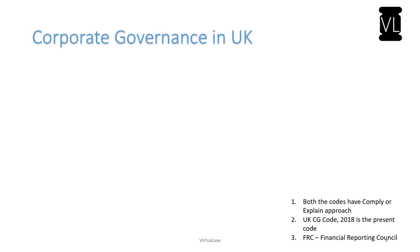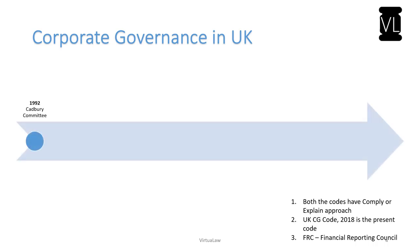Now let us look into the evolution of corporate governance in various nations. In the UK, in the year 1992, the Cadbury Committee was constituted. Its main role was to come up with a corporate governance code, and they produced the first version of the UK Corporate Governance Code in 1992, covering issues like the role of the board of directors, role of auditors, audit committees, risk management, and other standard corporate governance provisions.